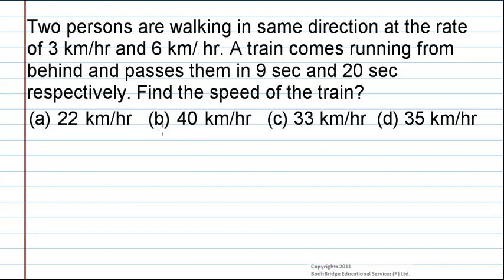The options are 22 km per hour, 40 km per hour, 33 km per hour, or 35 km per hour. We know that suppose two bodies are moving in the same direction.